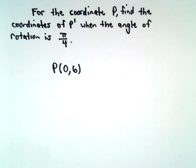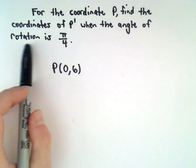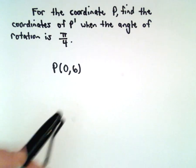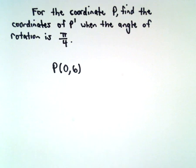Okay, for the coordinate P, we're going to find the coordinates of P' when the angle of rotation is pi over 4, and it's rotated counterclockwise about the origin. So we have the point P that has coordinates 0, 6.